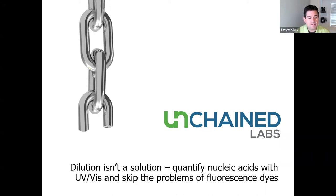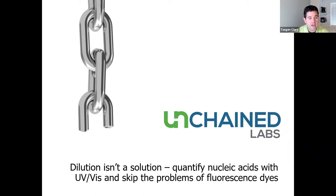I've been really excited about this topic. We have many customers using our Lunatic UV-Vis instrument to really change how they're doing their quality control and analysis for quantitation of DNA, RNA, and other nucleic acids — specifically as part of their genomics workflows. Many people don't need to go into the ultra-low sensitivity range to do a really fast, really good measurement of these two types of molecules. Indira will speak to both of those today.